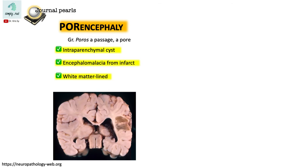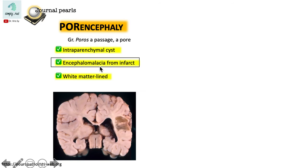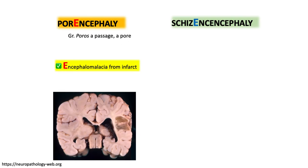In summary, here are the three key features of porencephaly. If I were to remember just one point from these three, I'd pick encephalomalacia. The next time I encounter porencephaly, I'll think encephalomalacia, which stems from an infarct. Infarcts occur within the parenchyma — hence it's an intraparenchymal cyst. And since it's an intraparenchymal cyst, it gets lined by white matter.